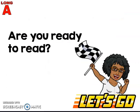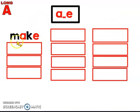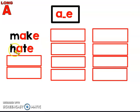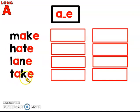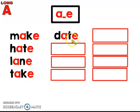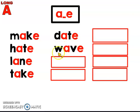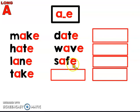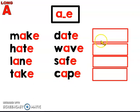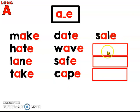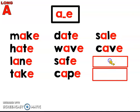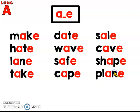Now let's read some long A words. Are you ready? Let's go. Make. Remember, we have a silent E at the end here, so we don't make the E sound. Hate. Lane. Plane. Plane. Awesome blending.